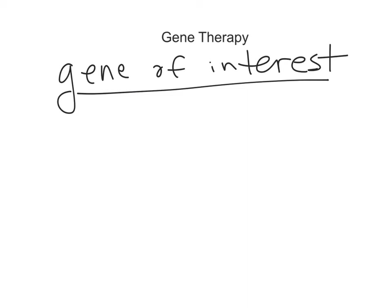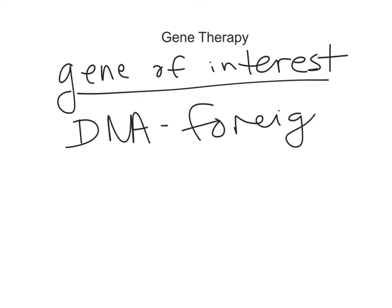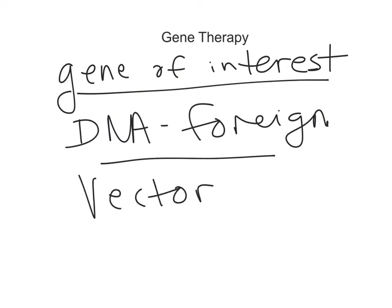The next question is where did that gene come from? What was the source of that gene of interest? This is going to be the foreign DNA — which species or where did that gene of interest come from? Then you have to find out what is the vector. The vector is the means by which we're going to get that foreign DNA, that gene of interest, into a host cell.